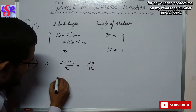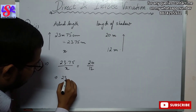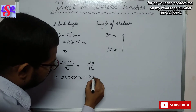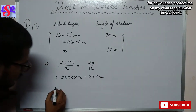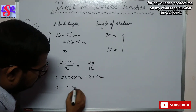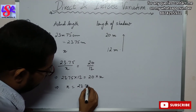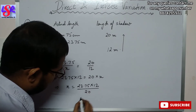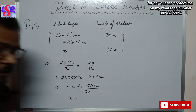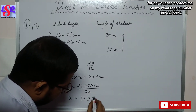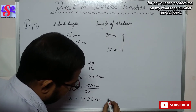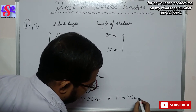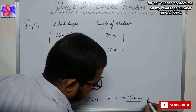Doing cross multiplication: 23.75 into 12 equals to 20 into x. Therefore x equals to 23.75 into 12 upon 20. Solving for x we get 14.25 meter, which can also be written as 14 meter and 25 centimeter as the answer.